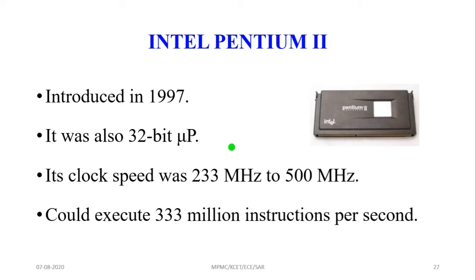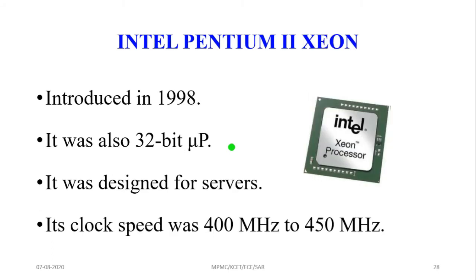Intel Pentium II is a slot-type processor with clock speeds from 233 MHz to 500 MHz, capable of executing 333 million instructions per second, introduced in 1997. The evolution continues with Pentium III and Pentium 4. The Pentium 4, introduced in 2000, has clock speeds ranging from 1.3 GHz to 3.8 GHz and contains 42 million transistors inside the single chip.